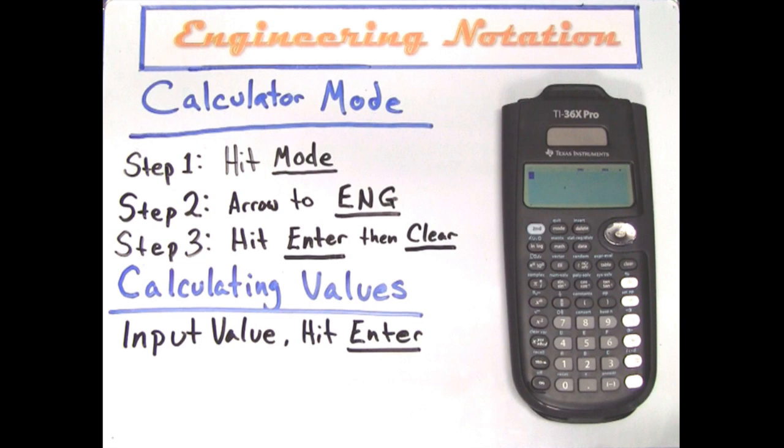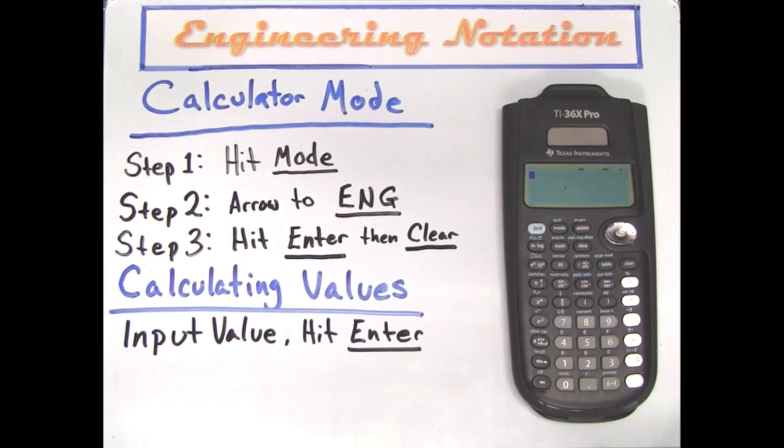Now let's do some examples. Remember that engineering notation is a way of simplifying numbers with many digits. These could be very large numbers or very small numbers, but the key is simplification.